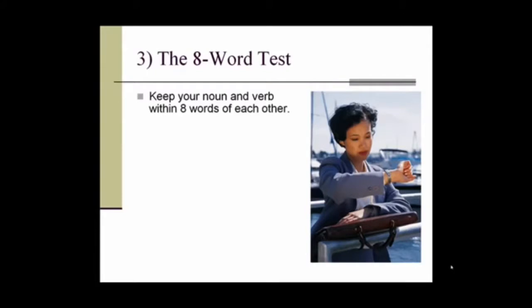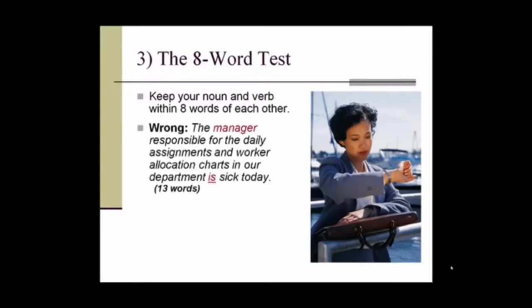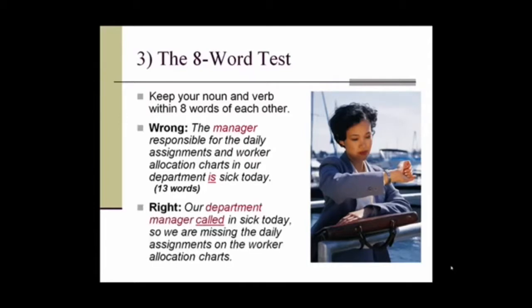Tip number three is to perform the eight-word test. We should keep our noun and our verb within eight words of each other — the closer, the better. Don't make your reader work too hard to keep track of who is doing what. Wrong example: 'The manager responsible for the daily assignments and worker allocation charts in our department is sick today.' There are 13 words between the noun and the verb.